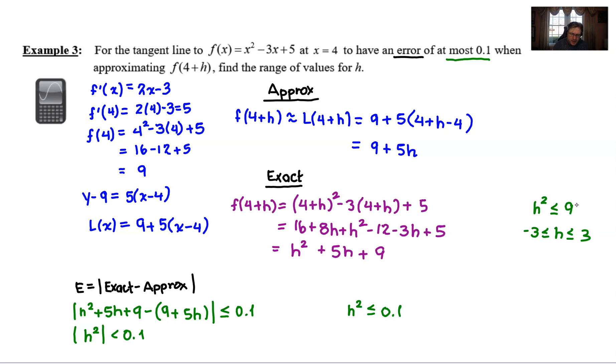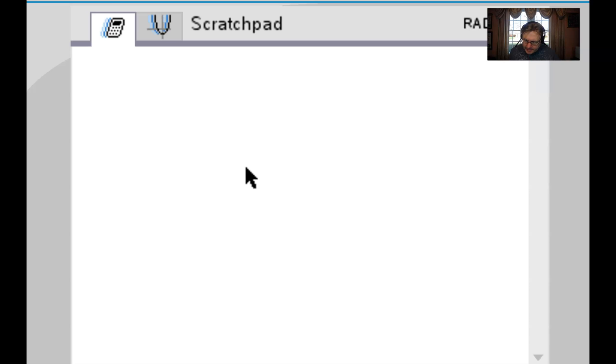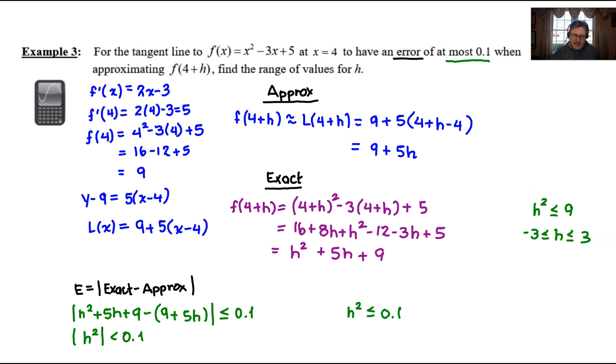Now for this particular problem, we need to know what is the square root of 0.1. Let's go to the calculator and check that out. And here I go. And all I'm going to do here is just take the square root of 0.1. And let's go ahead and round this to three decimal places. So 0.316. We'll return to the document.